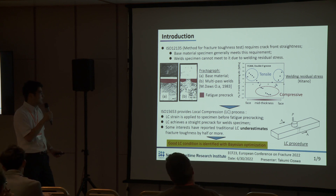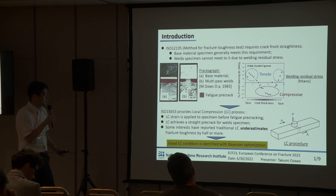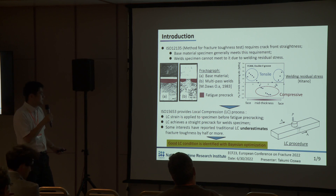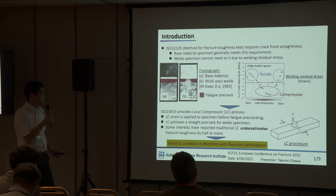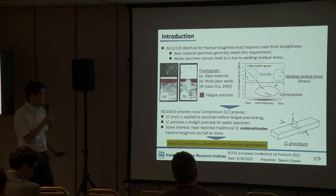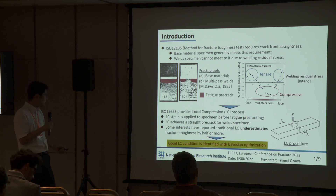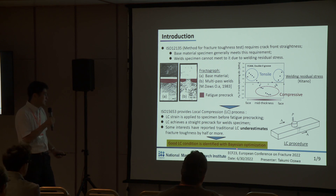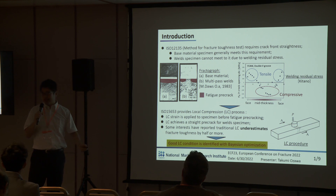It is said that such a distribution makes the crack front bow in weld specimens. In order to solve this problem, ISO 15653 provides the local compression (LC) process. LC strain is applied to the specimen before fatigue pre-cracking, and LC achieves a straight pre-crack for weld specimens. However, some researchers have reported that the traditional LC underestimates the fracture toughness value by half or more.